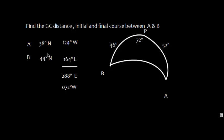In this video, I'm going to explain how to find great circle distance, initial and final course between two given points, Point A and Point B. The latitude of Point A is 38 degrees north, longitude is 124 degrees west. Point B is 44 degrees north and longitude is 164 degrees east.